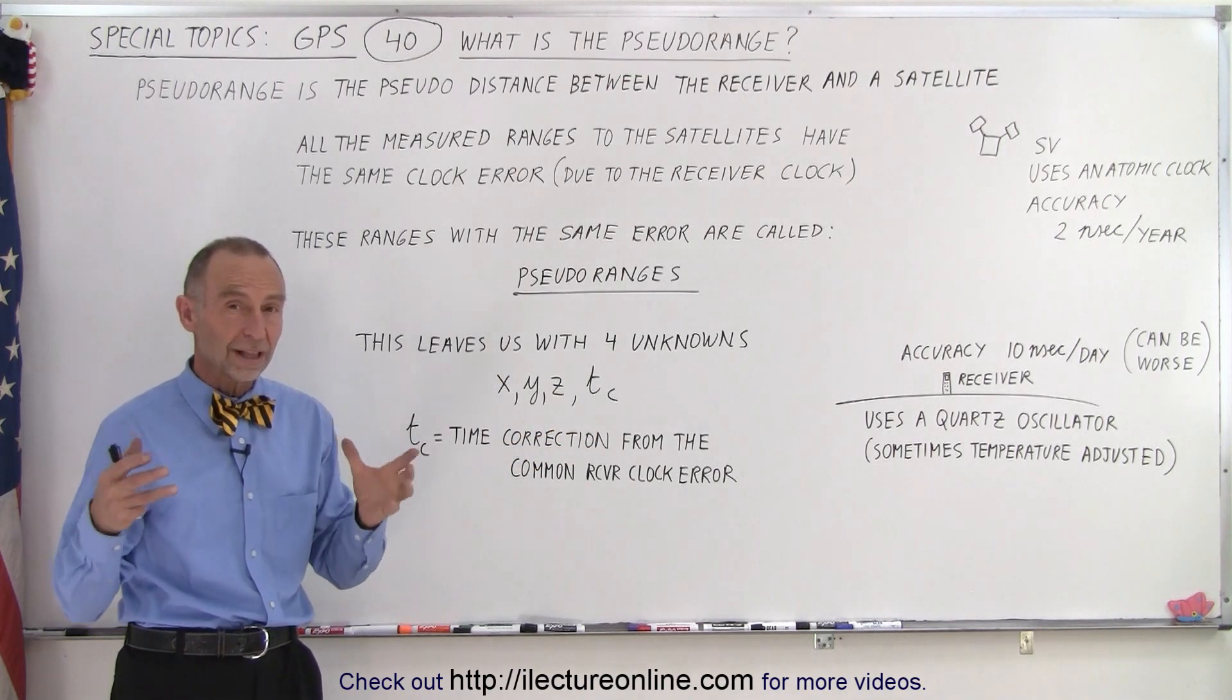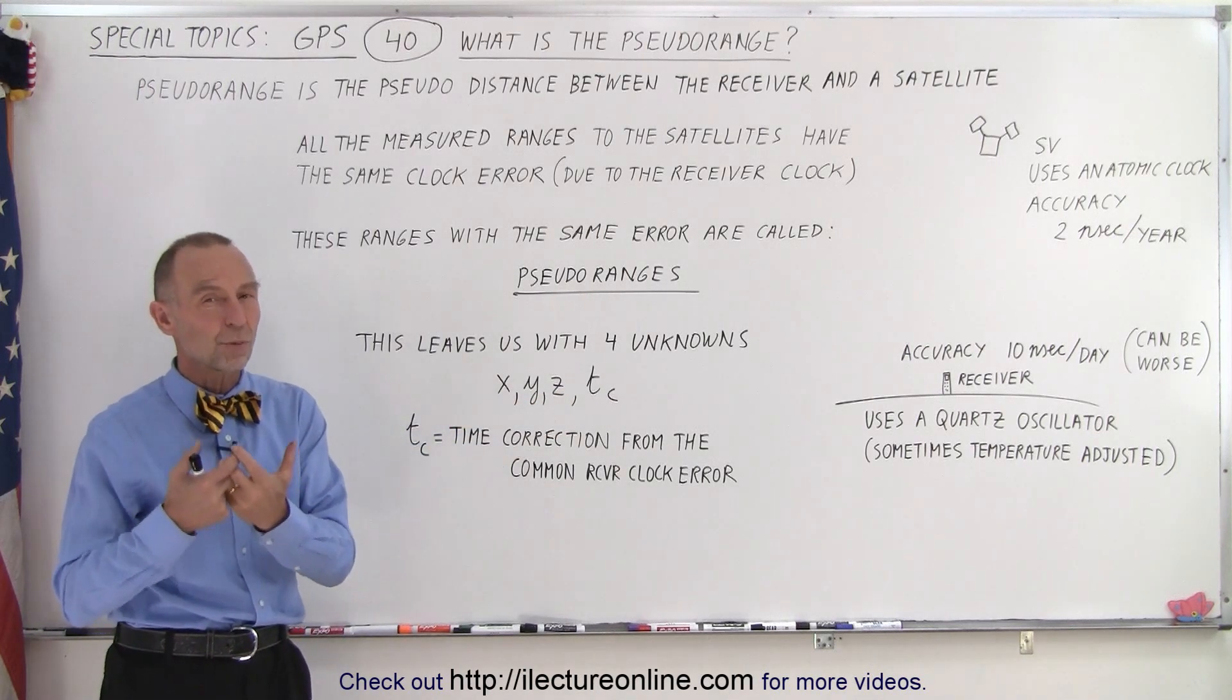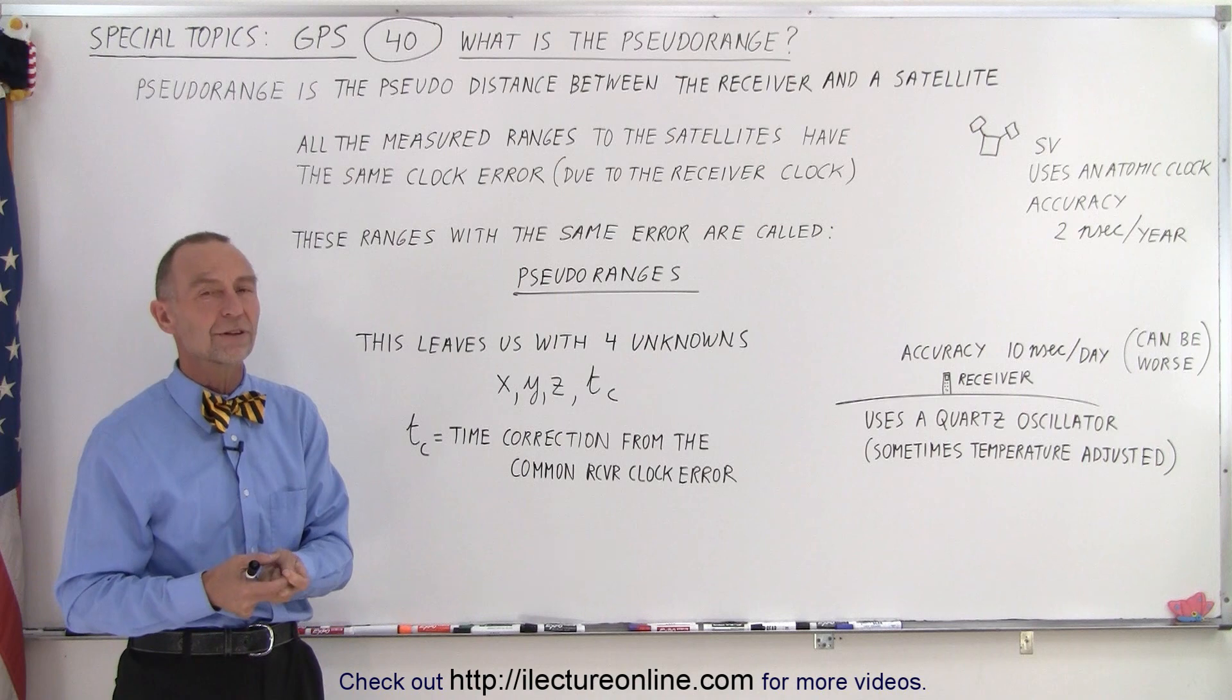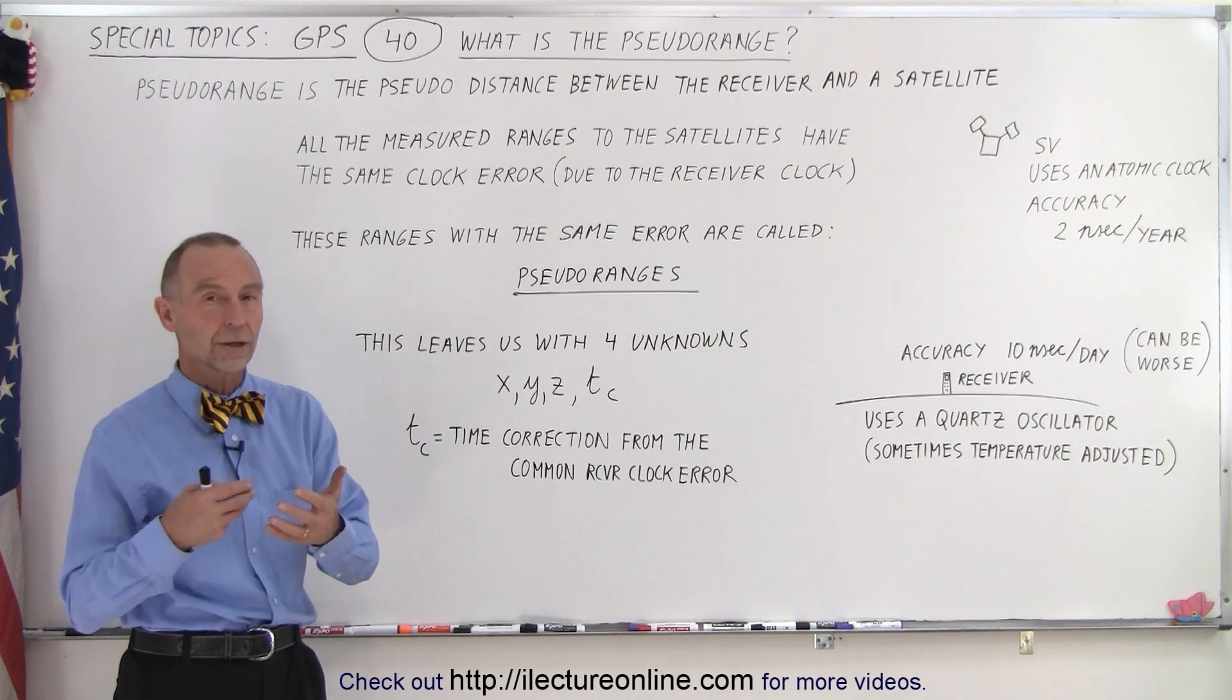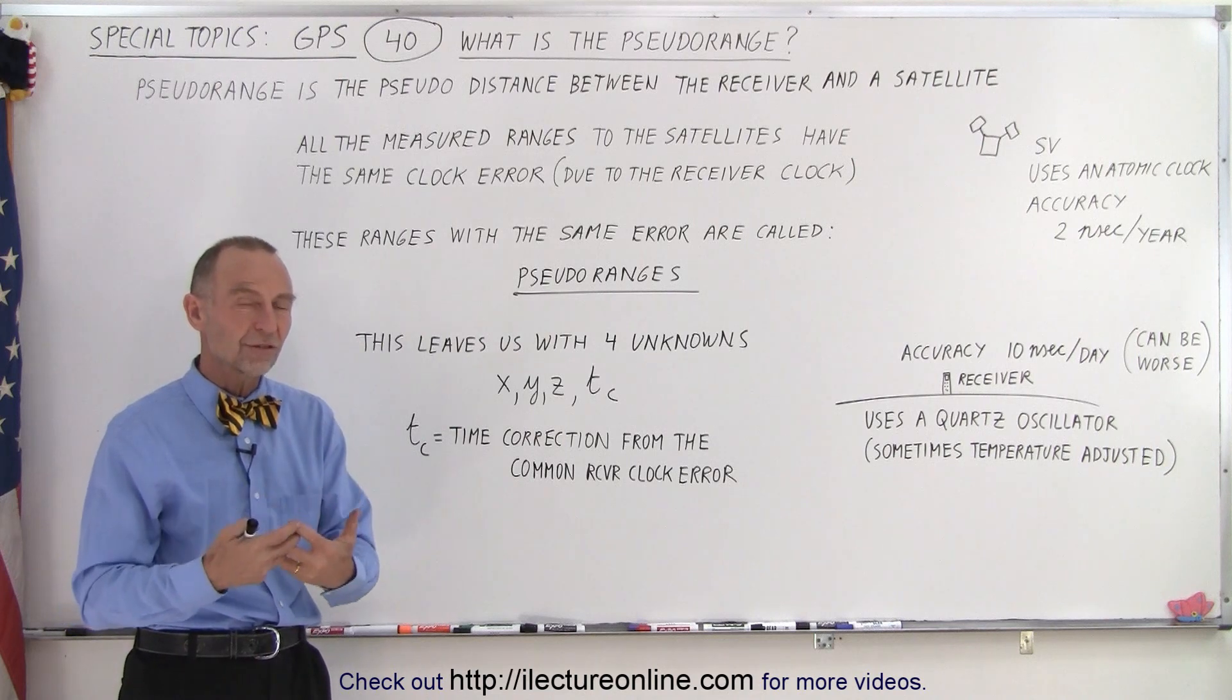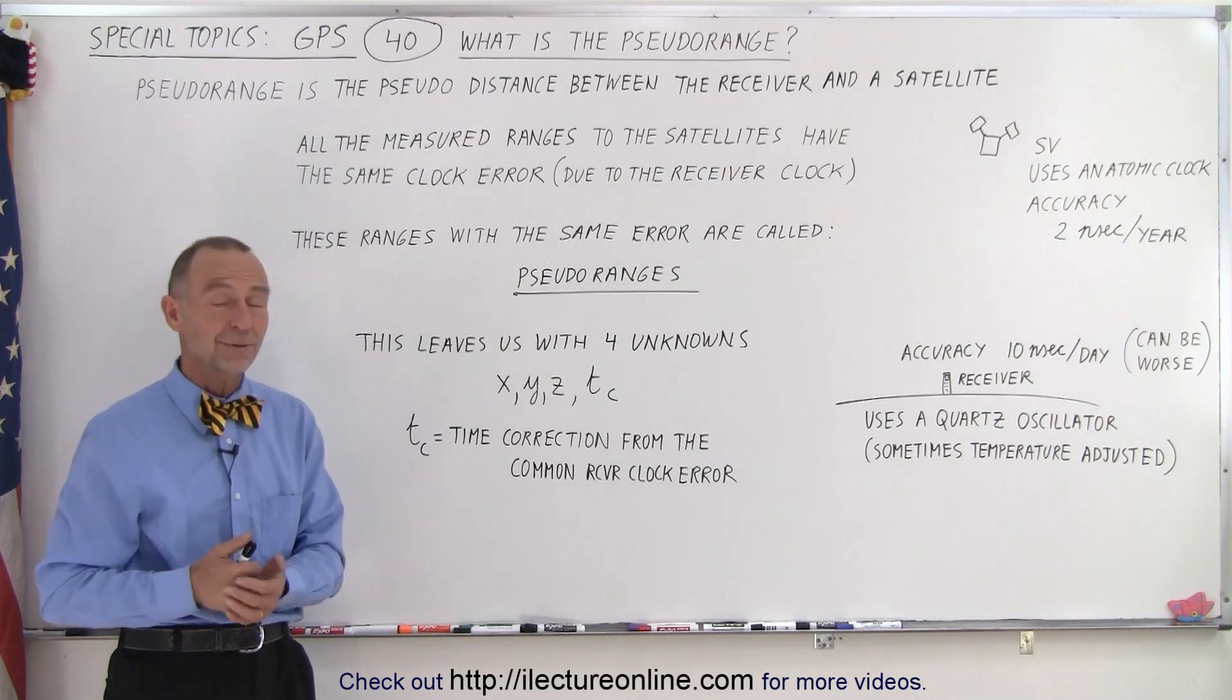And then once we can remove the clock error by solving the information from four satellites combined, then we can solve for the four unknowns and we can get a much more accurate position of the receiver. Then we can get something that's very close to the geometric distance or the true distance between the receiver and the satellites, and that is how it's done.